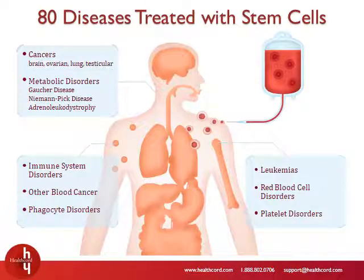Hematopoietic stem cells have been used to treat diseases for more than 60 years. The very first stem cell transplant was performed in 1957 by Dr. E. Donald Thomas. He went on to win the Nobel Prize in 1990 for his discovery of cell transplants as a way to treat human diseases. Today, hematopoietic stem cells are used to treat over 80 life-threatening diseases, including cancers, immune system disorders, blood disorders, and metabolic disorders.